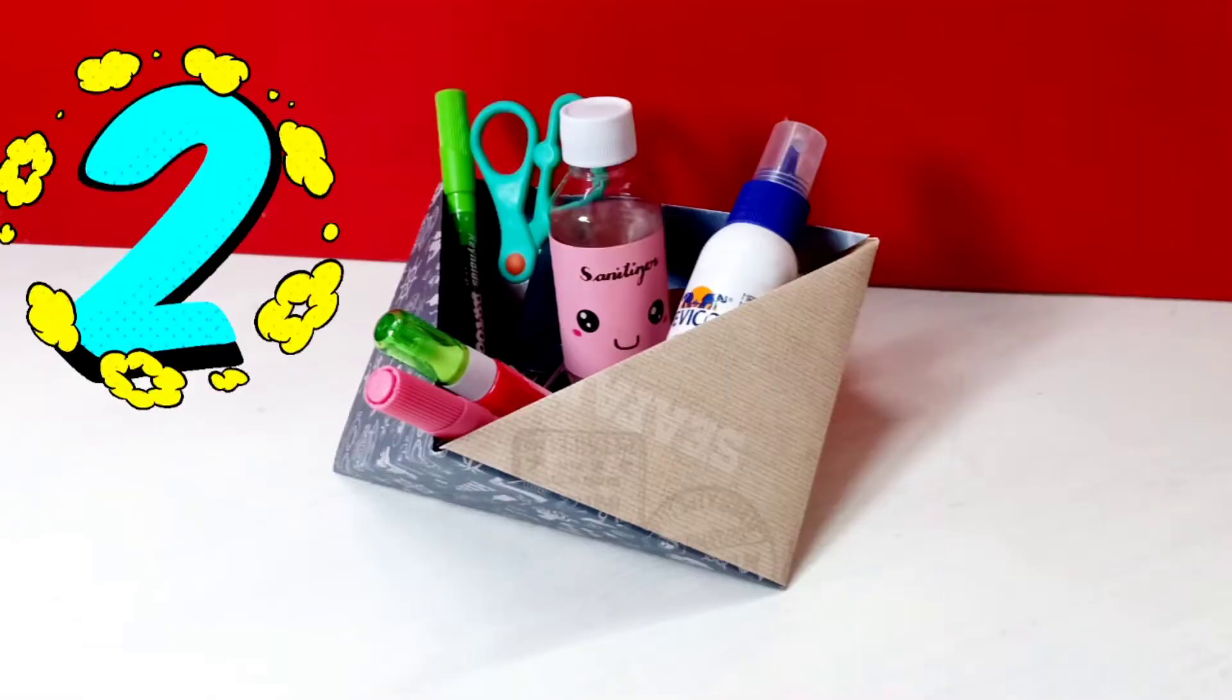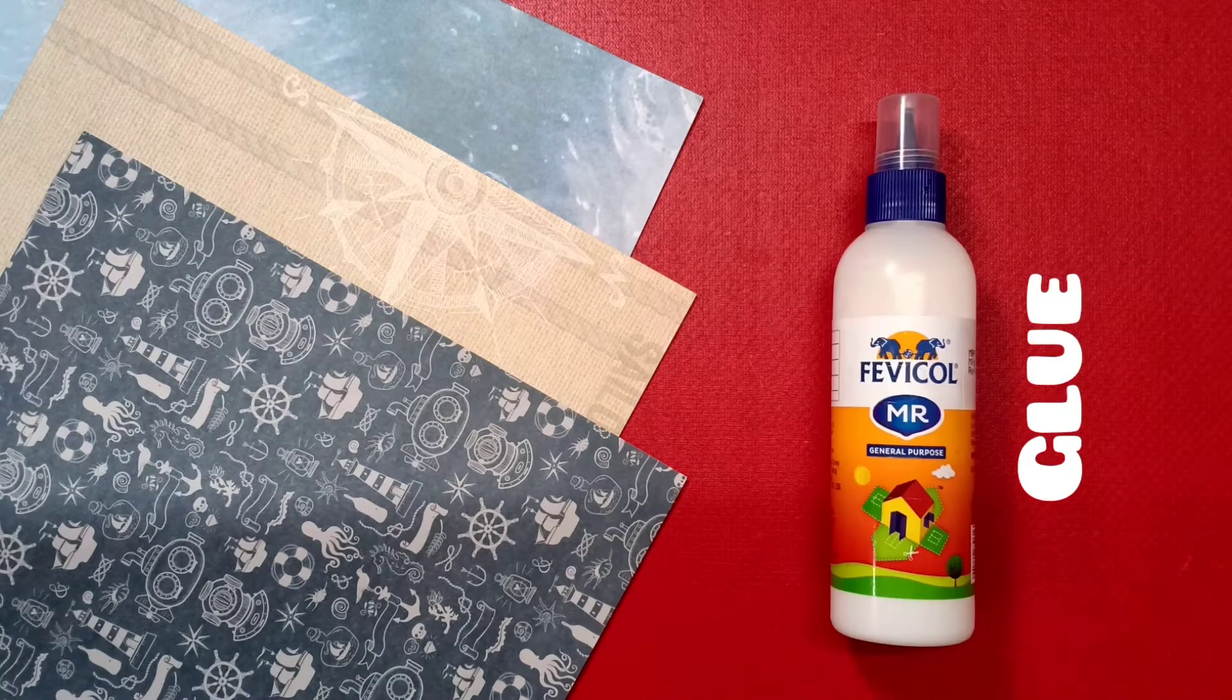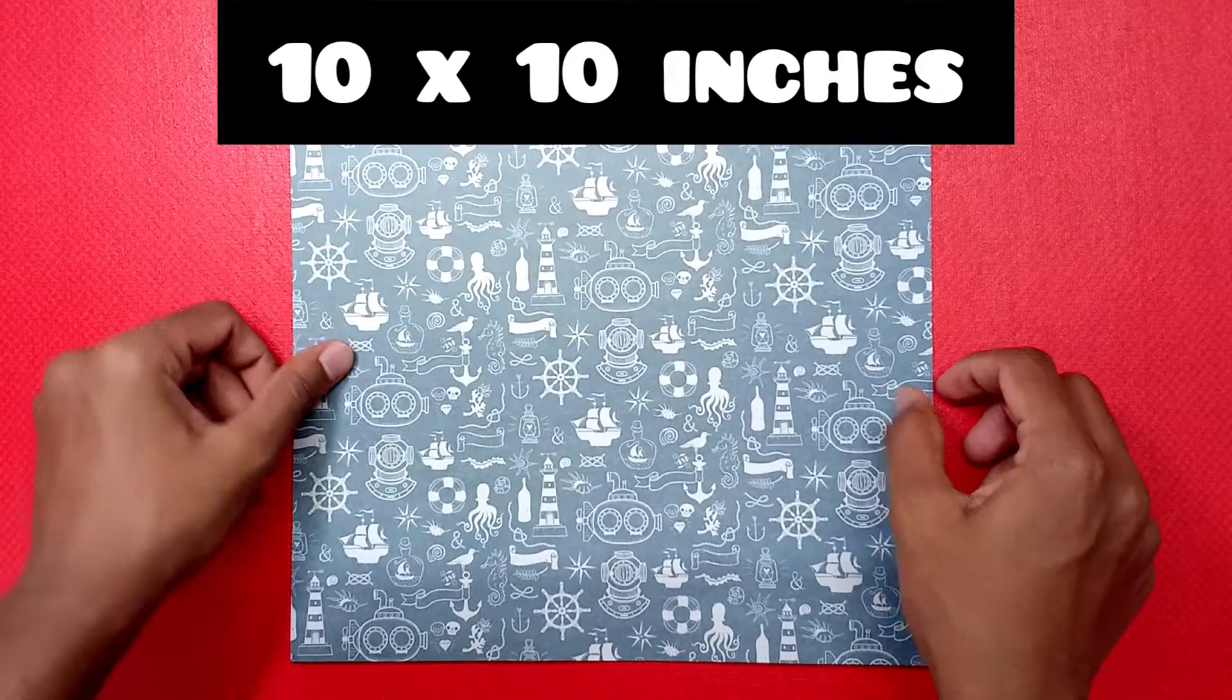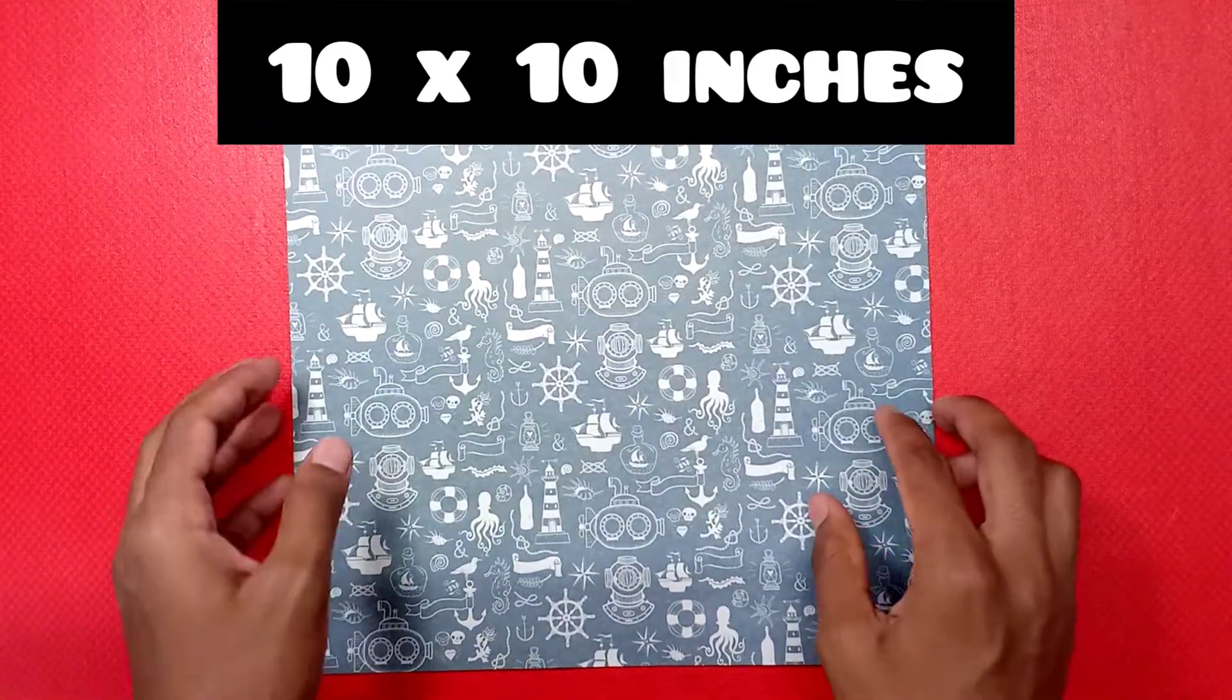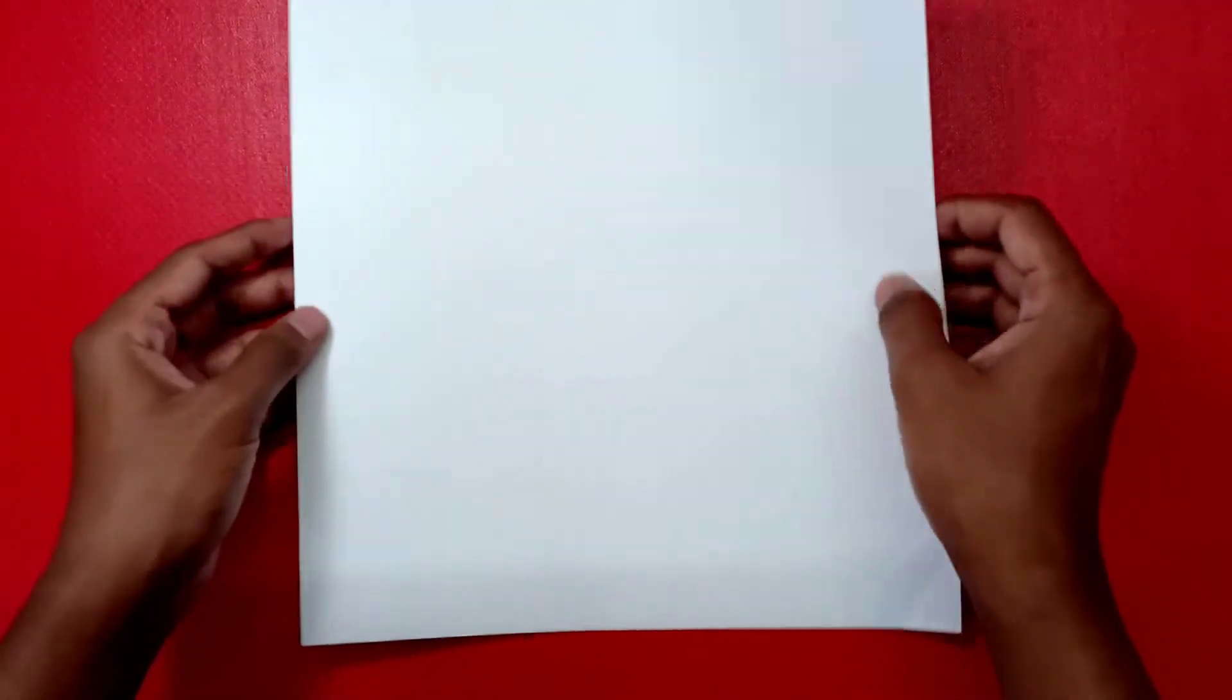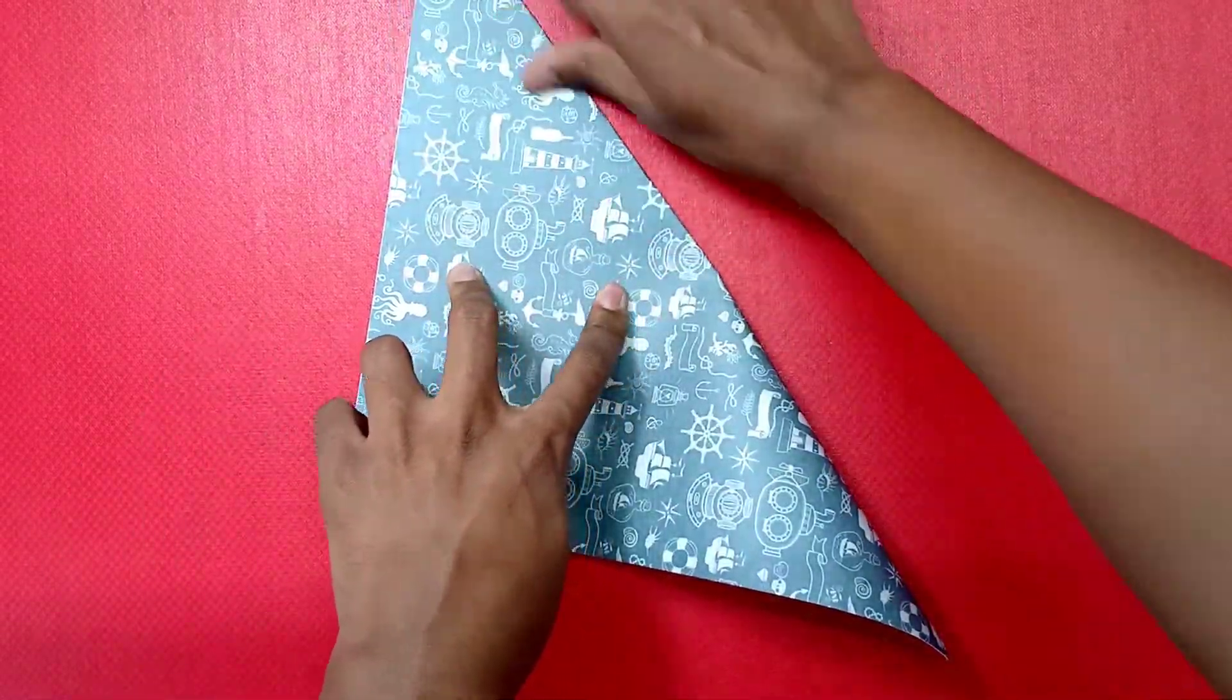For the next one, you will need... To start off, you will need a square sheet of paper. Here I have taken a 10 x 10 inches of pattern paper. First you need to fold the paper into half diagonally. You will get a triangular shape.